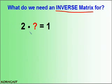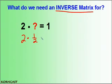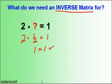Let's say we can't divide here to solve for this question mark. What can we multiply to 2 to get 1? Well, if I multiply 2 by 1 half, that product should give me 1. And indeed it does. So if I multiply this 2 by 1 half, I get a true statement.